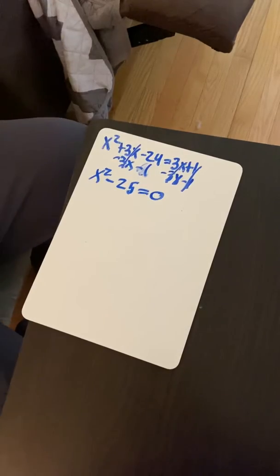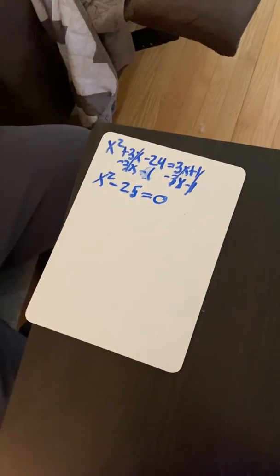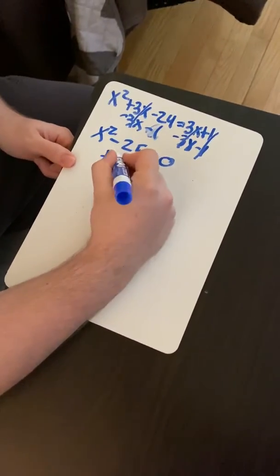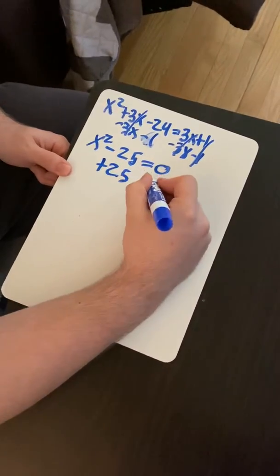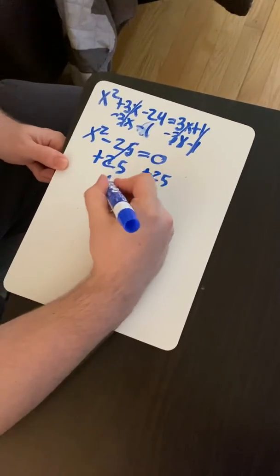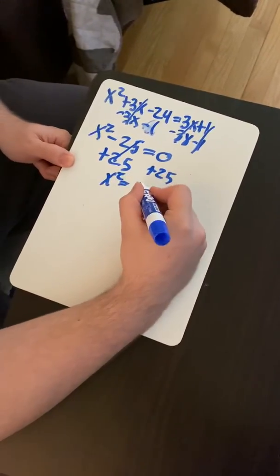So from there, what we would do is try to solve for x squared. So we're going to add 25 to both sides of the equation. And we get x squared equals 25.